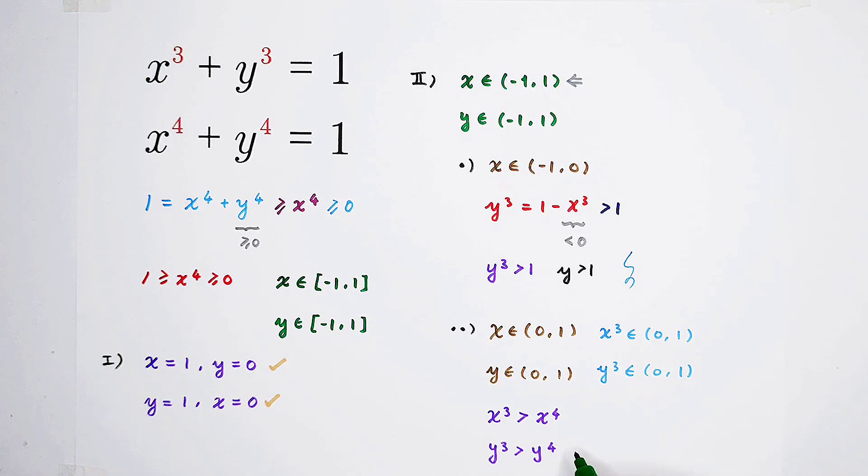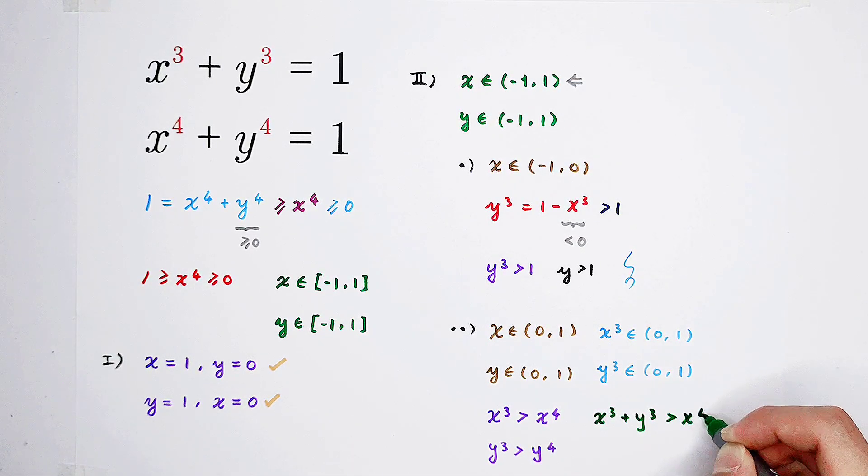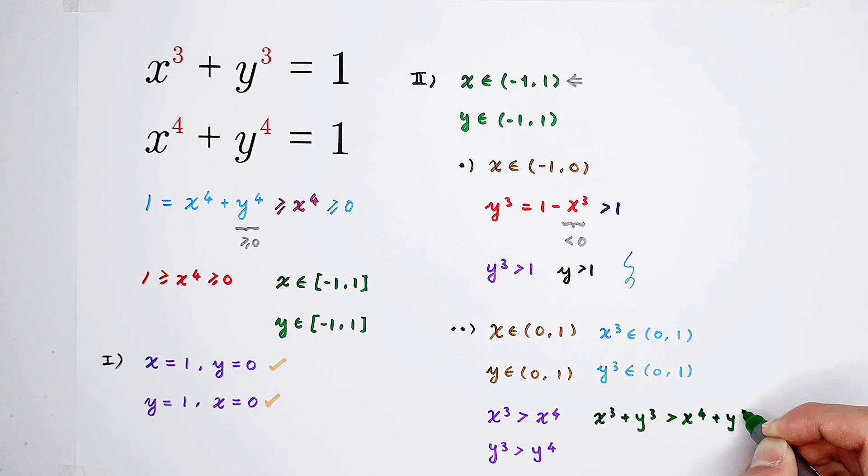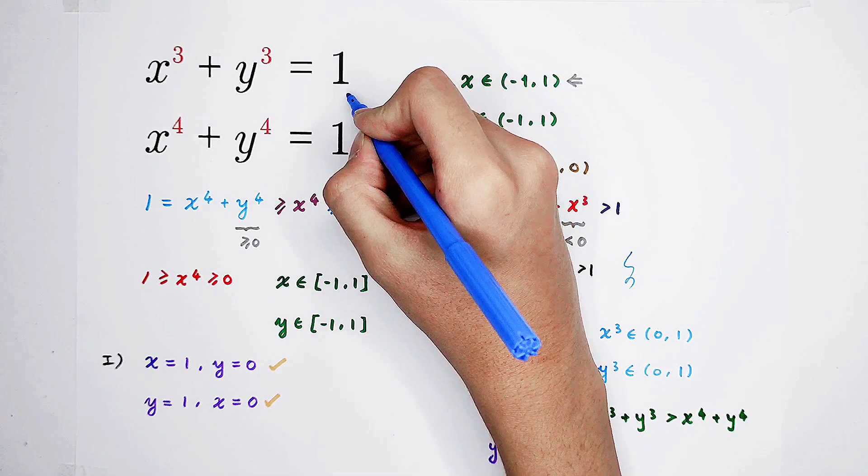cubed is greater than the fourth power. Because x and y are both greater than 0, smaller than 1, if you add these two inequalities together, x cubed plus y cubed should be greater than x to the power 4 plus y to the power 4. Wait a moment.